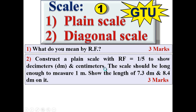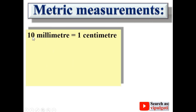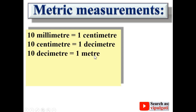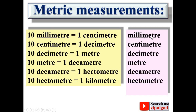Before the first question, we have to understand metric measurements. This is basic information: 10 millimeters equals 1 centimeter, 10 centimeters equals 1 decimeter, 10 decimeters equals 1 meter, 10 meters equals 1 decameter, 10 decameters equals 1 hectometer, and 10 hectometers equals 1 kilometer. In ascending order: millimeter × 10 = centimeter × 10 = decimeter × 10 = meter × 10 = decameter × 10 = hectometer × 10 = kilometer.